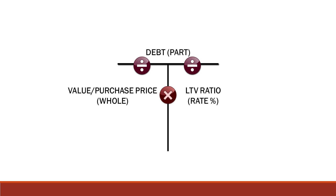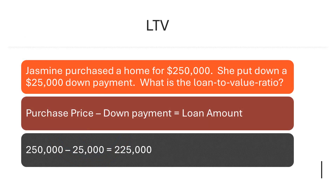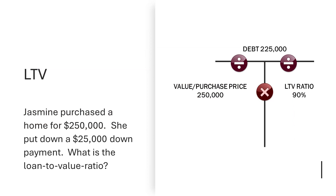Here is an LTV problem you may see on your exam. Jasmine purchased a home for $250,000 and put down a $25,000 down payment. What is the loan-to-value ratio? We subtract her down payment of $25,000 from $250,000 to determine her loan amount: $225,000. Debt divided by value equals loan-to-value: $225,000 divided by $250,000 equals 0.9, or 90% LTV.